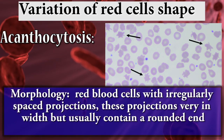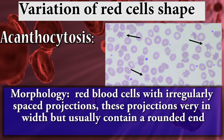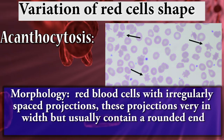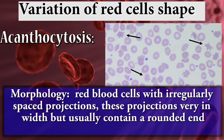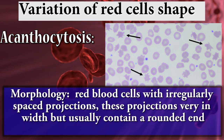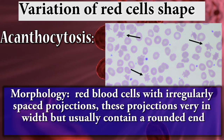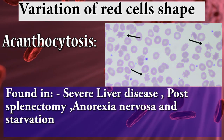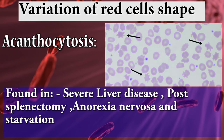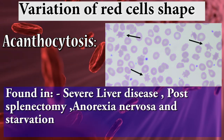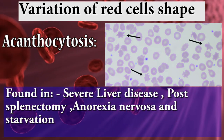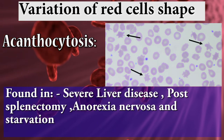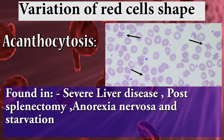Acanthocytosis: red blood cells with irregularly spaced projections that vary in width but usually have a rounded end. Found in severe liver disease, post-splenectomy, anorexia nervosa, and starvation.